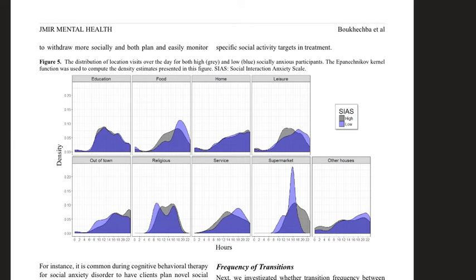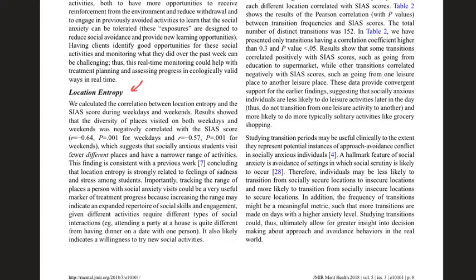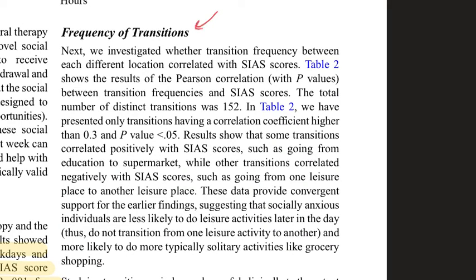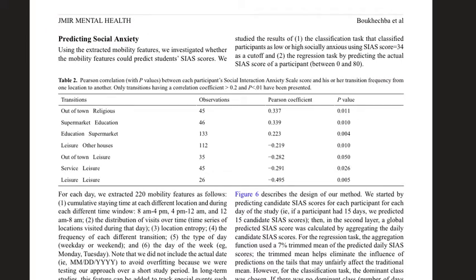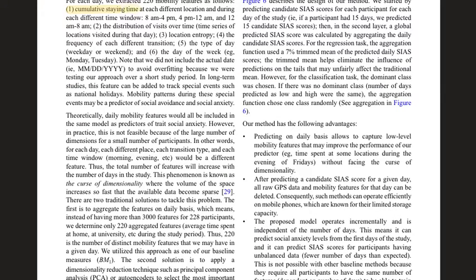Figures show distributions for location types such as supermarket, other houses, religious, out-of-town, food, and home, comparing low and high SIAS groups—where gray indicates those more prone to social anxiety. The authors then discuss location entropy, relating to how many different places people have been visiting, and transition frequency results are reported with Table 2 showing Pearson correlations between SIAS scores and transition frequencies.